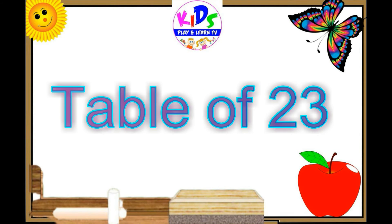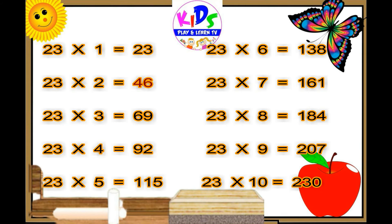Let's repeat. 23 ones are 23, 23 twos are 46, 23 threes are 69, 23 fours are 92.